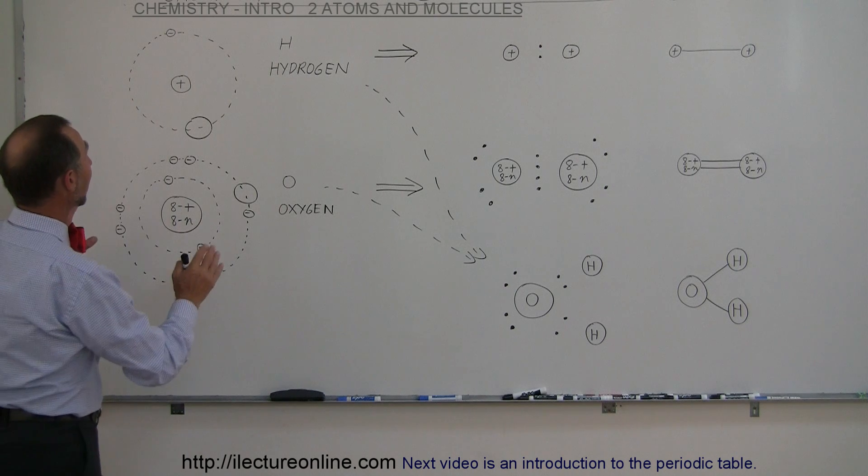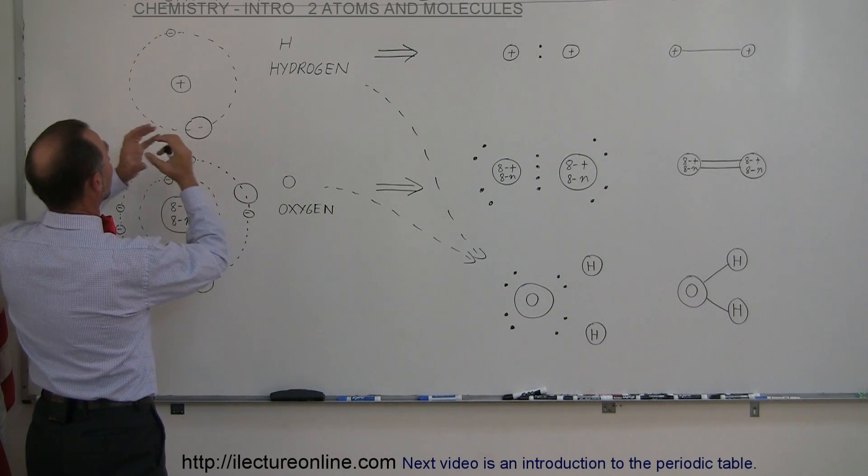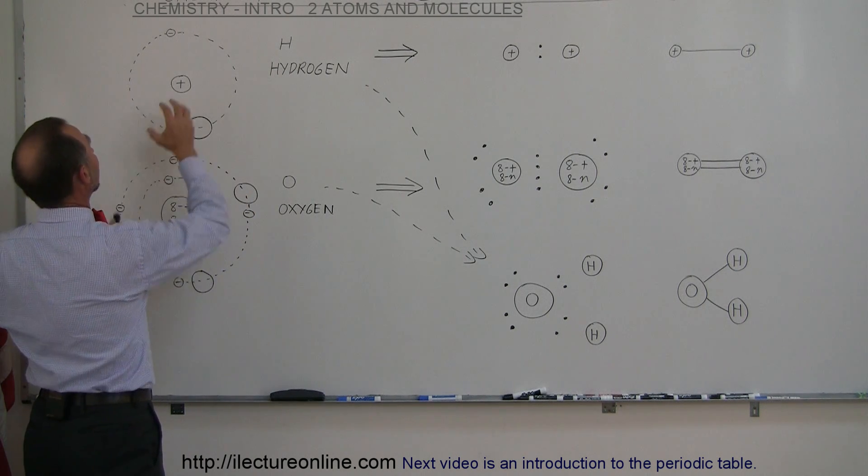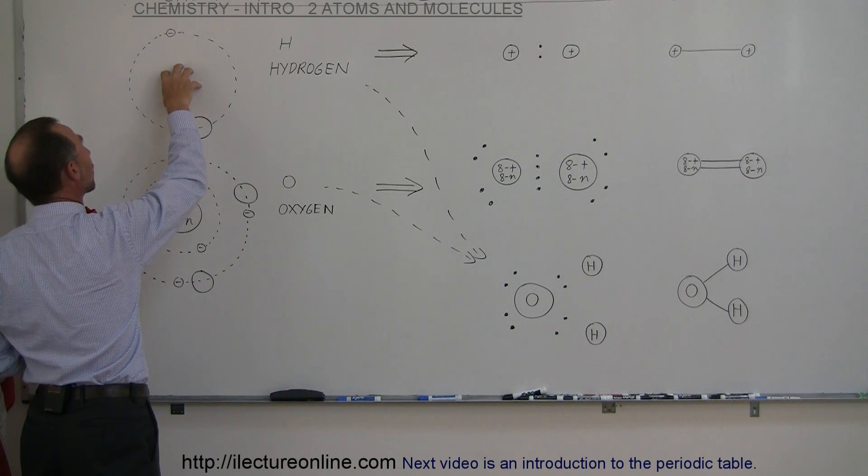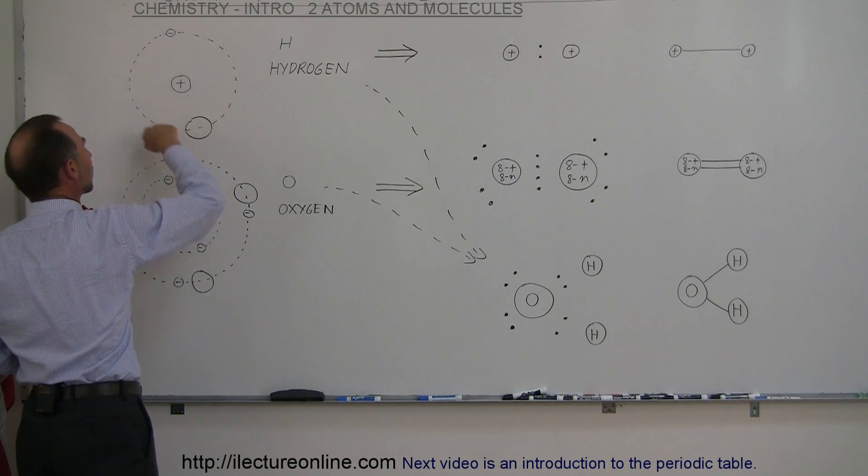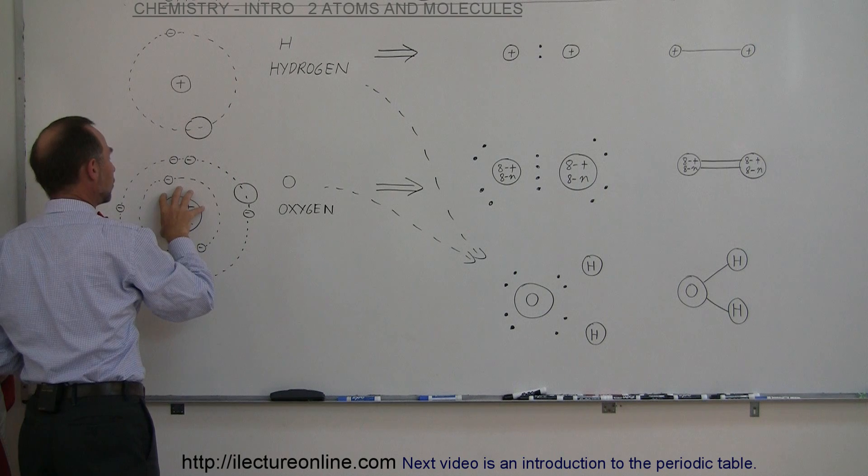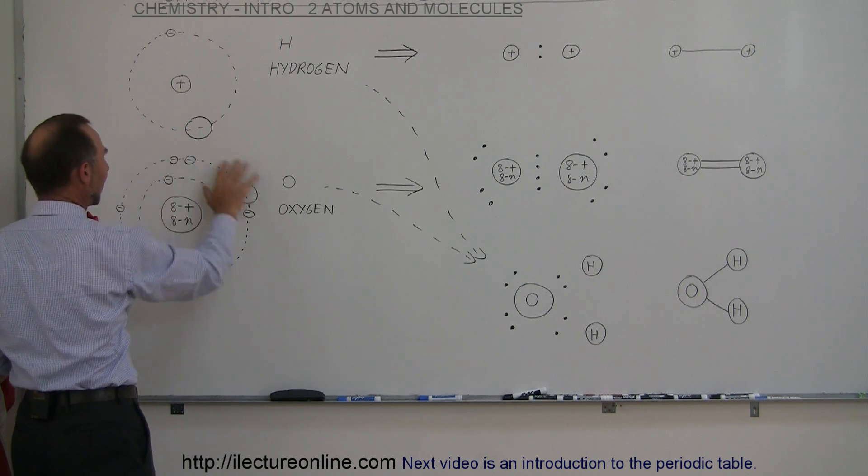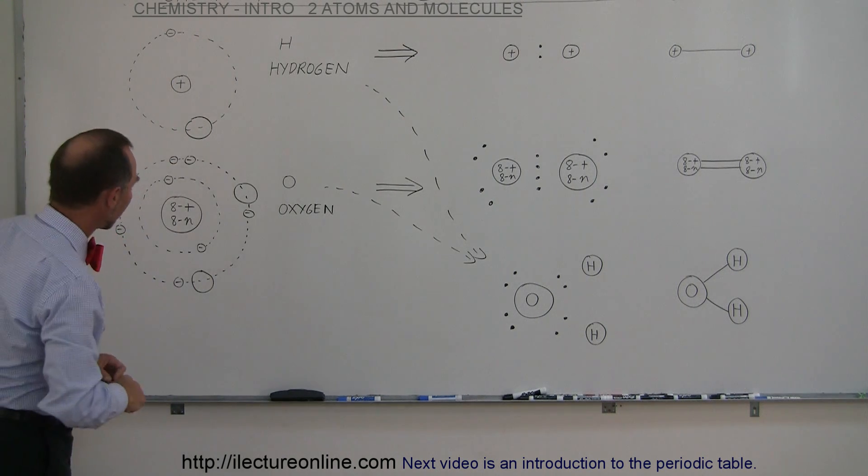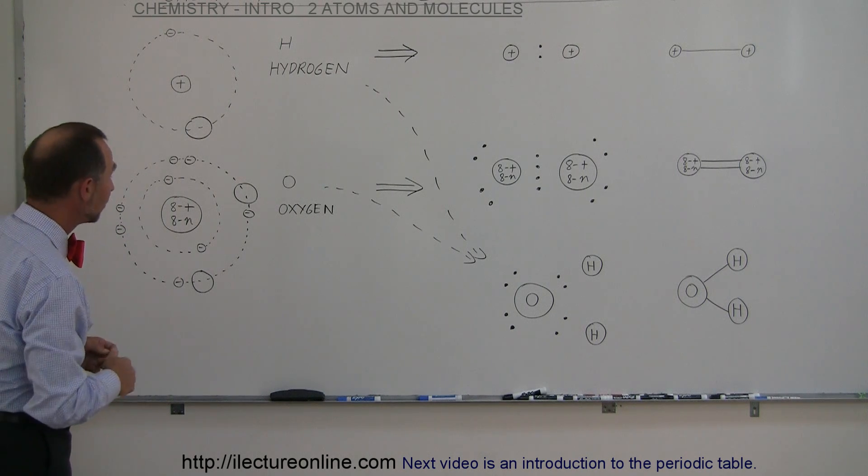Now we know what atoms are. Atoms are simply the simplest building blocks of matter that contain protons and neutrons in the nucleus and electrons around it in orbit. Protons and neutrons in the nucleus and electrons zipping around that nucleus at very high speeds.